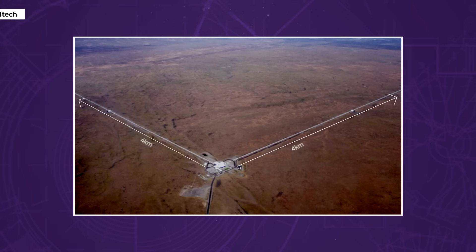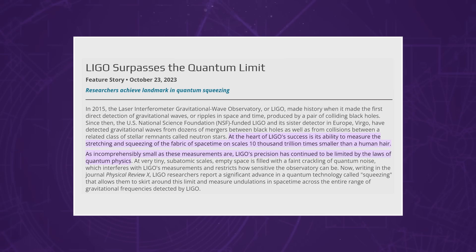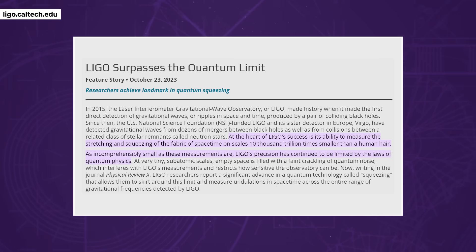Detecting this minuscule change is so extremely precise it's hard to put into perspective. The arm of the LIGO detector is four kilometers — two and a half miles — in length, and a strong gravitational wave will change the length of this arm by less than one-thousandth of a proton's diameter. On the official LIGO website, they compare this to measuring the distance to the nearest star, 4.2 light years away, to the accuracy of the width of a human hair. It is simply incredible.